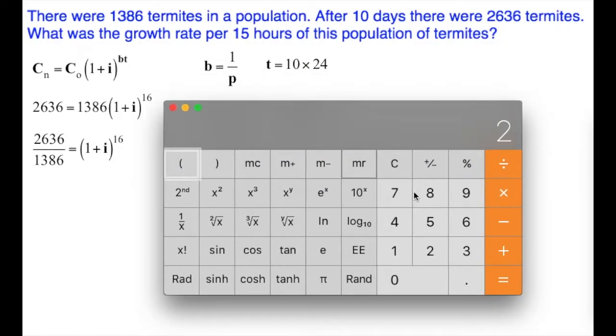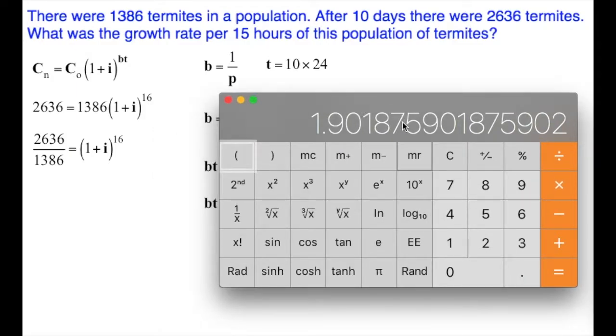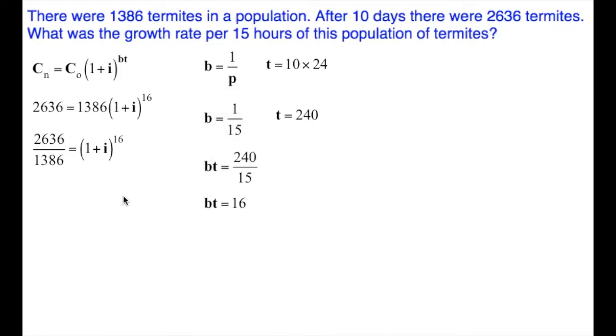2,636 divided by 1,386 is equal to 1.90187. I'm going to keep that number in the calculator, so we don't want to round this until we get to the end. 1.90188, it goes on forever, but keep the number in the calculator.